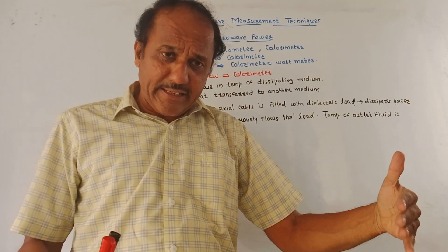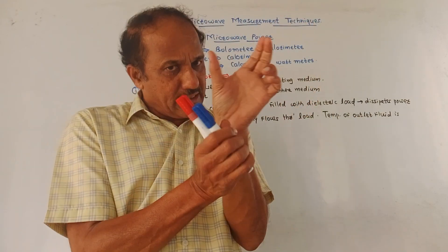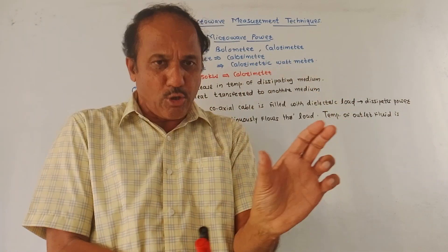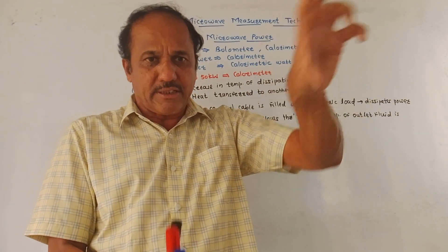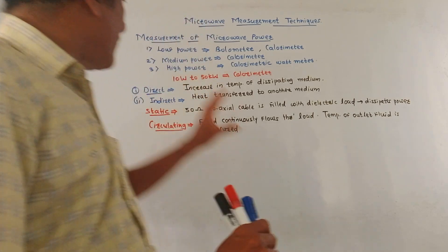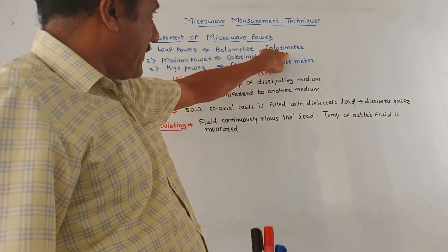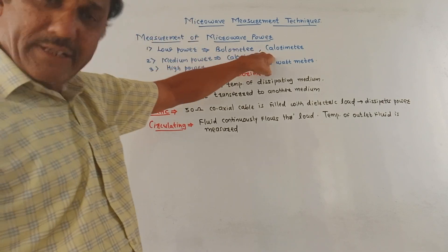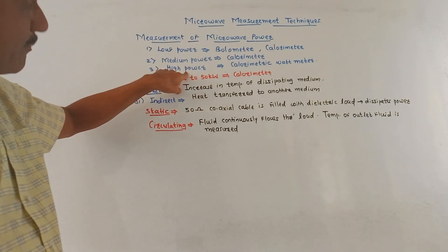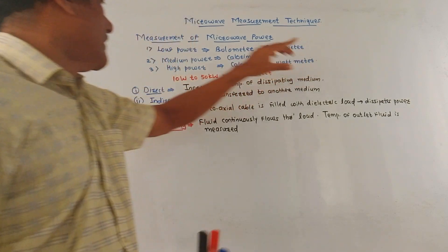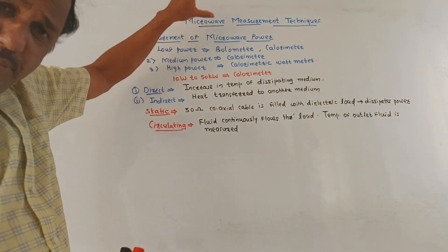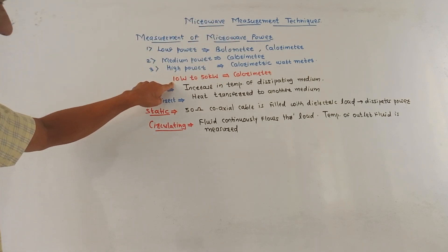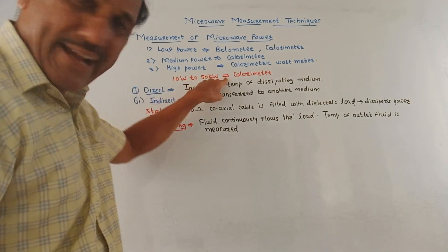The bolometer is the basic technique — it has a certain fixed resistance, and as the heat increases, the resistance changes. This bolometer is placed in a bridge circuit. For measurement of medium power, a calorimeter is used. For measurement of high power, a calorimetric wattmeter is used. The calorimeter measurement technique is applicable for microwave power in the range of 10 watts to 50 kilowatts.